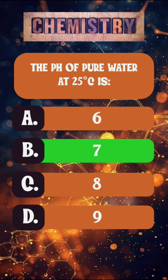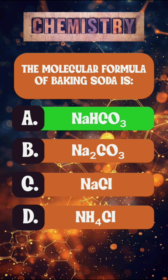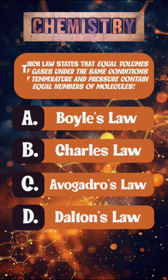Question two: the pH of pure water at 25 degrees Celsius is — the right answer is option B, seven. Question three: the molecular formula of baking soda is — the right answer is option A, NaHCO₃.